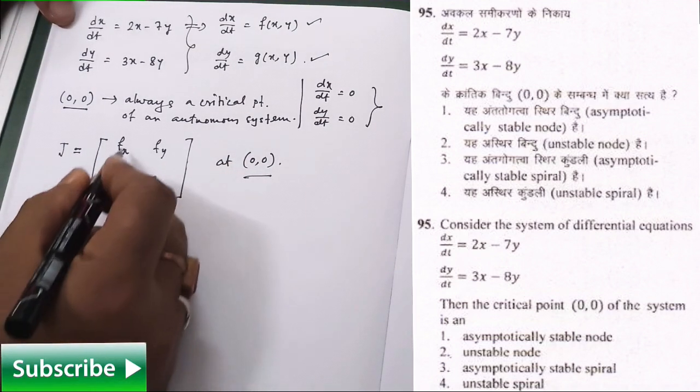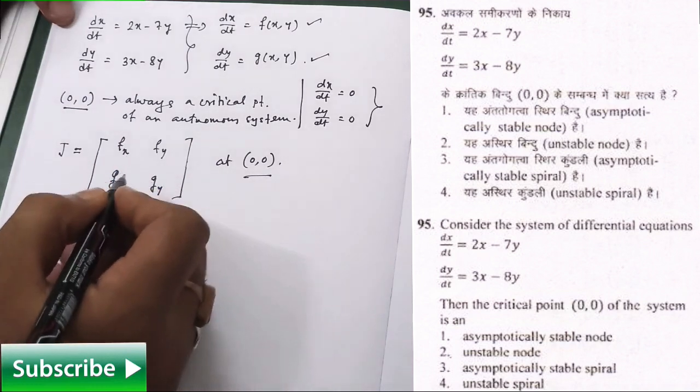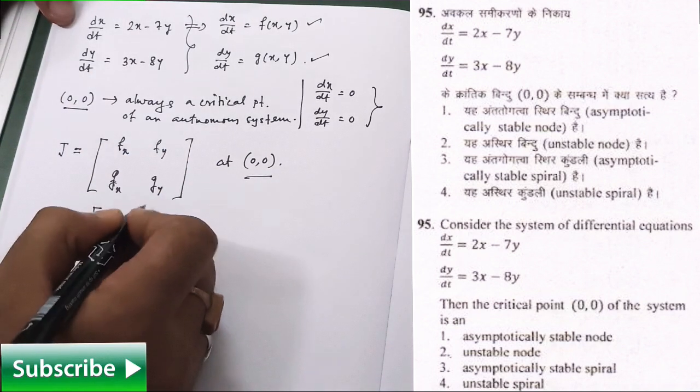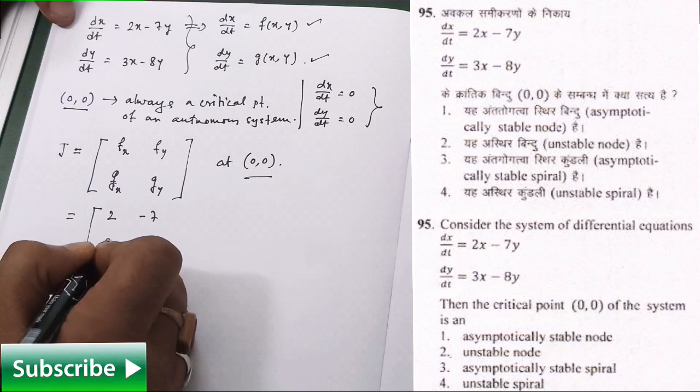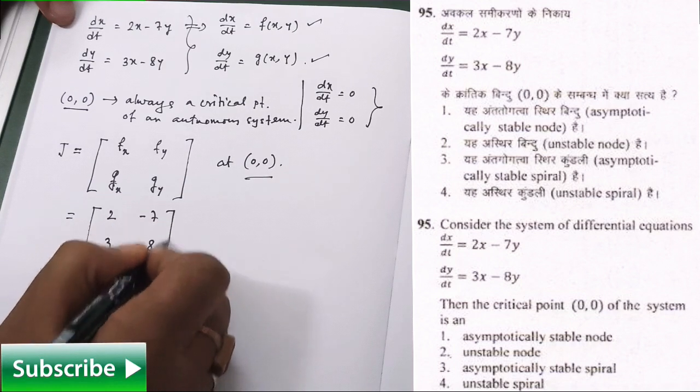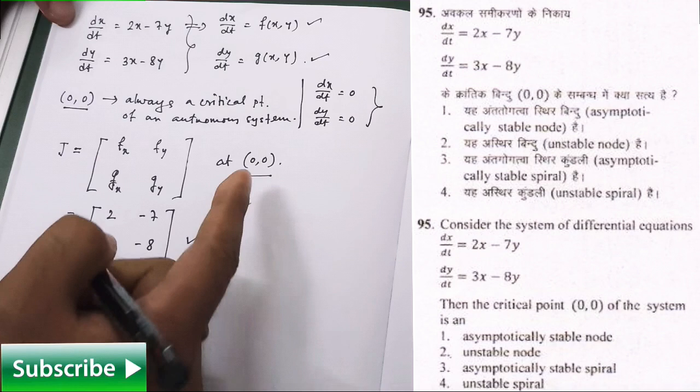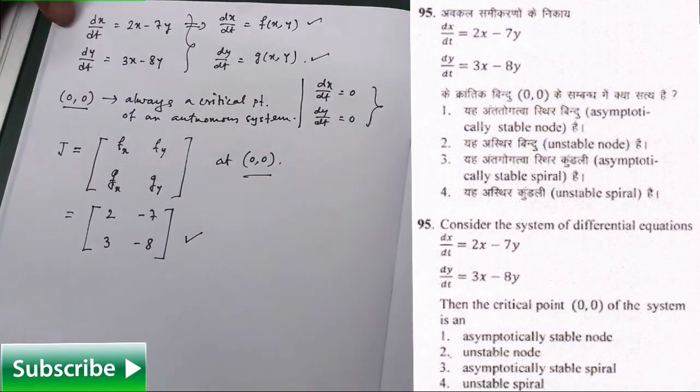So what will be your fx? fx is actually 2, fy is 7, gx is 3, and gy is -8. So this is the Jacobian matrix we are having at (0,0), fine.